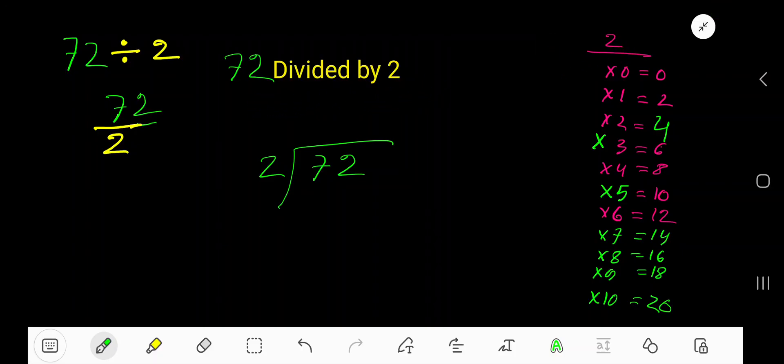72 divided by two. Two times zero zero, two times one two, two times two four, two times three six, two times four eight, two times five ten, two times six twelve. To find the multiplication table of two just add two to the previous step.